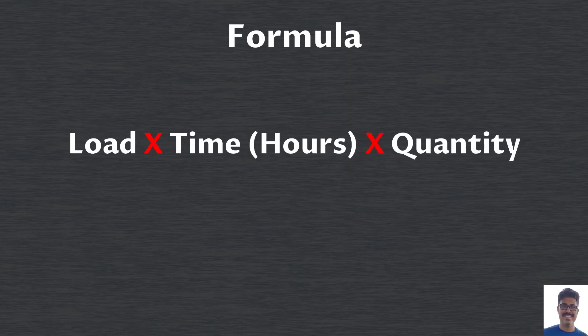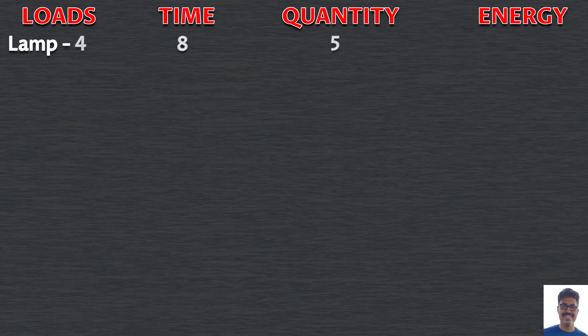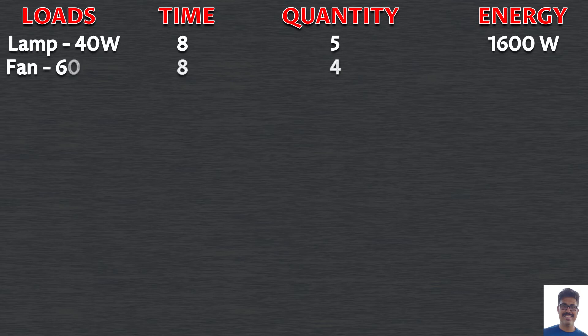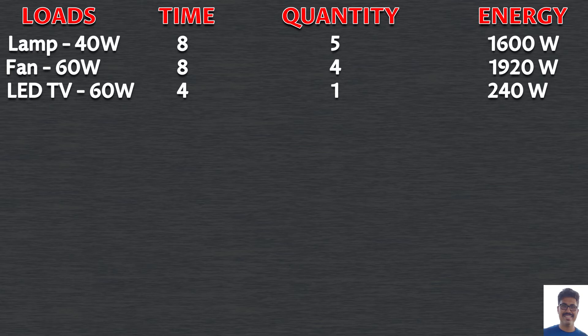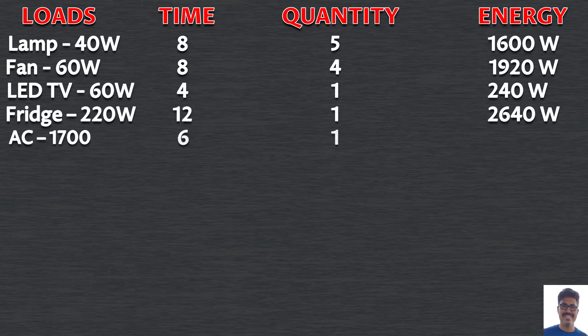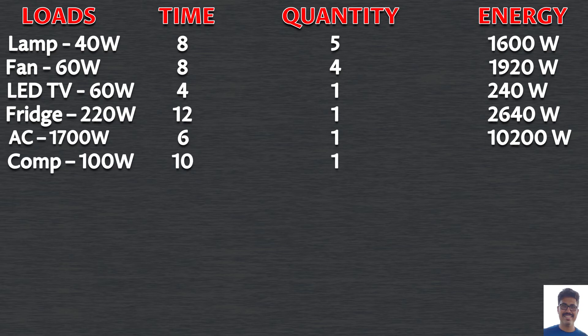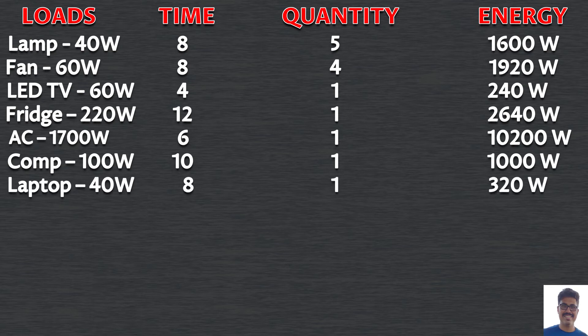The formula for total energy will be: load × time in hours × quantity. For lamps: 40 × 8 × 5 = 1600 watt-hours. For ceiling fans: 60 × 8 × 4 = 1920 watts. For TV: 240 watts. For refrigerator: 2640 watts. For AC, it will be much bigger — 10,200 watts. Desktop computer: 1000 watts. Laptop: 320 watts. You can pause the video, open a calculator, and add all the energy consumption values.